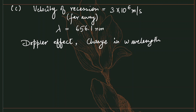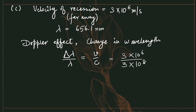We need to find the change in wavelength Δλ. The fractional change in wavelength equals the ratio of the velocity of recession to the speed of light: Δλ/λ = v/c. This ratio tells us how much the wavelength changes. So: v/c = (3×10⁶) / (3×10⁸) = 10⁻². Therefore Δλ = λ × 10⁻².